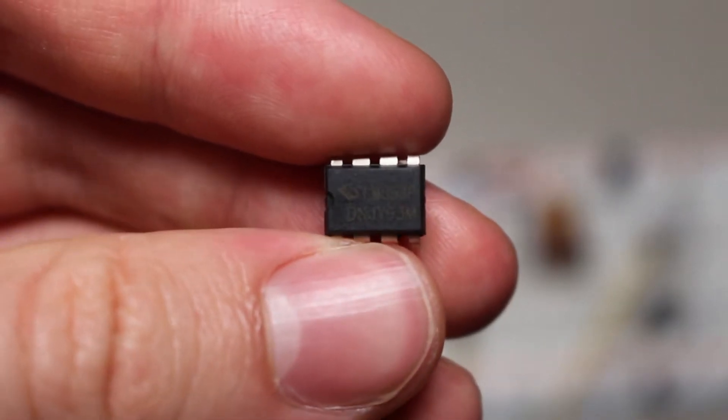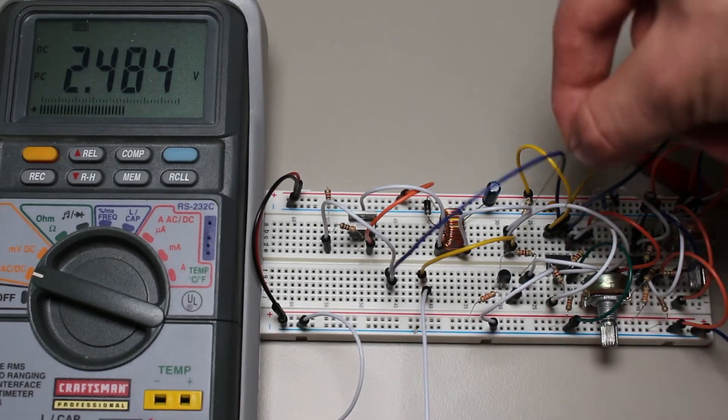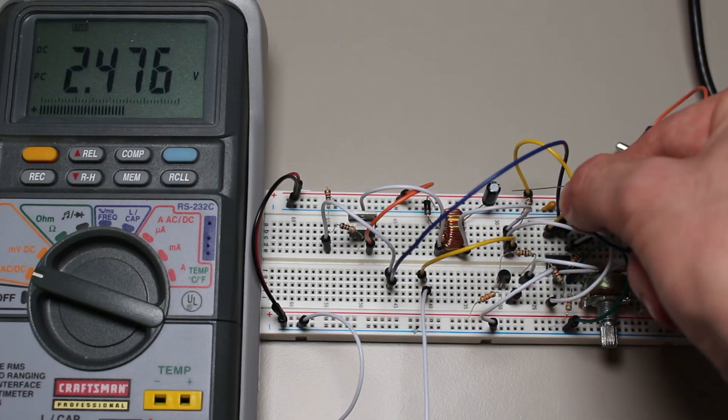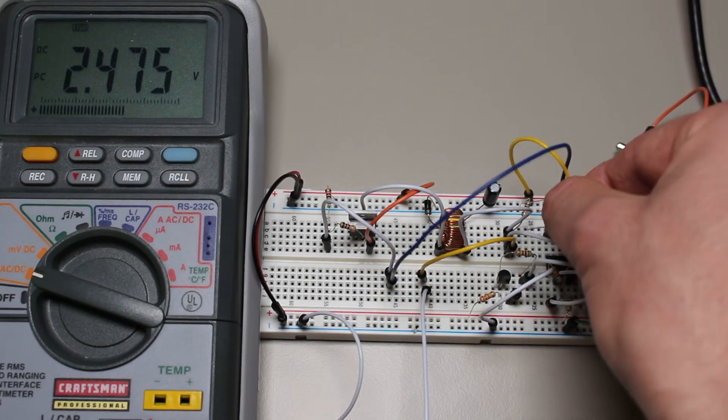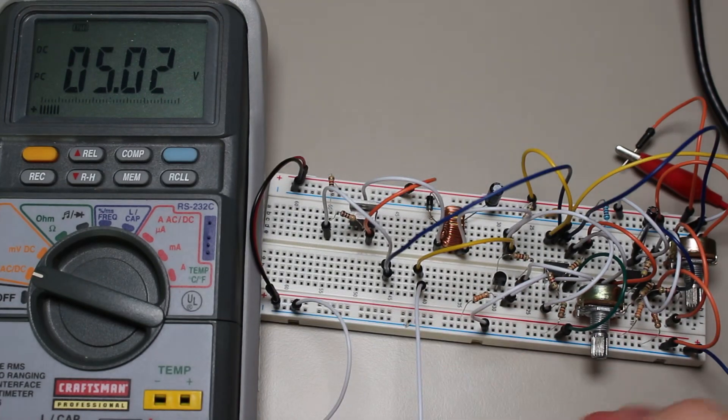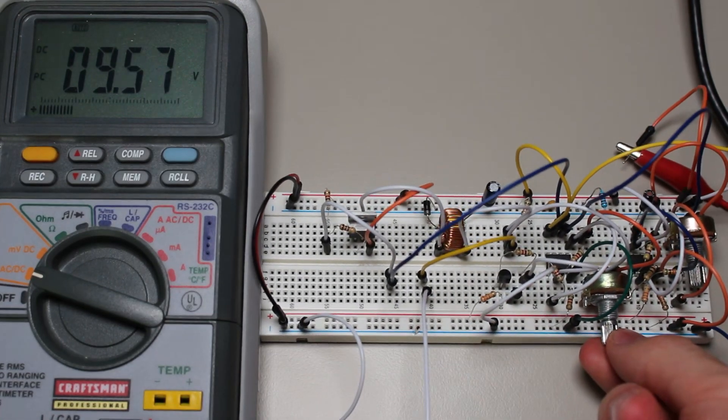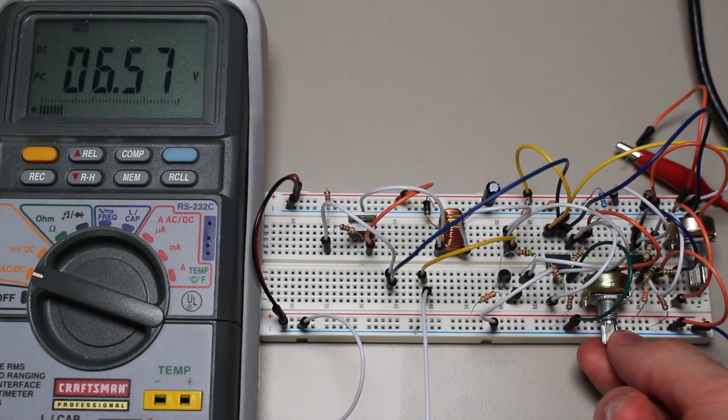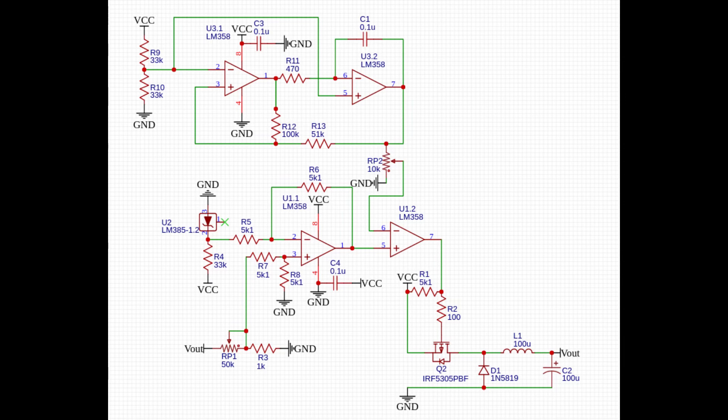As we can see, the output of the regulator stays stable even when we change the load, and we can also adjust the output voltage by twisting the potentiometer on the feedback voltage divider. Now I know I just mentioned a ton of connections, so if you're still confused about how I got this together, check out the schematic in the description.